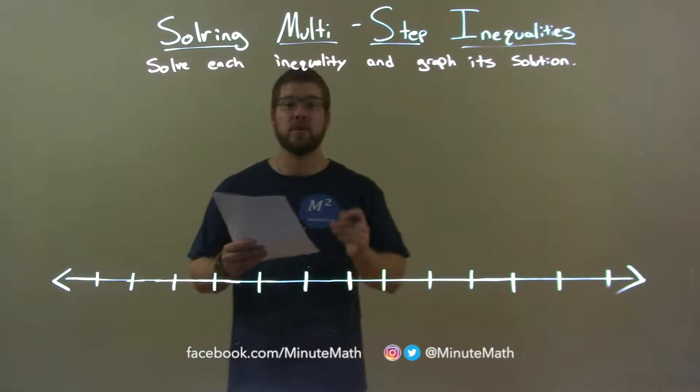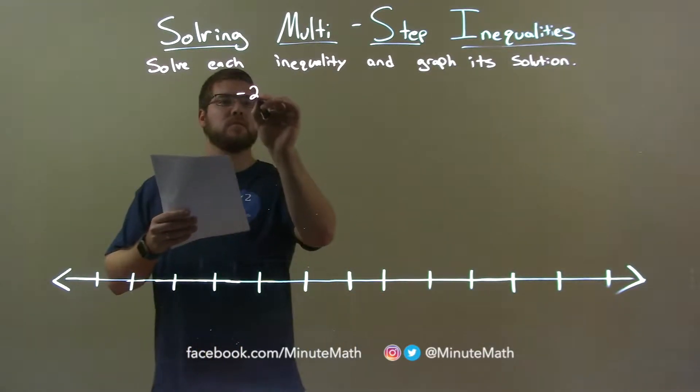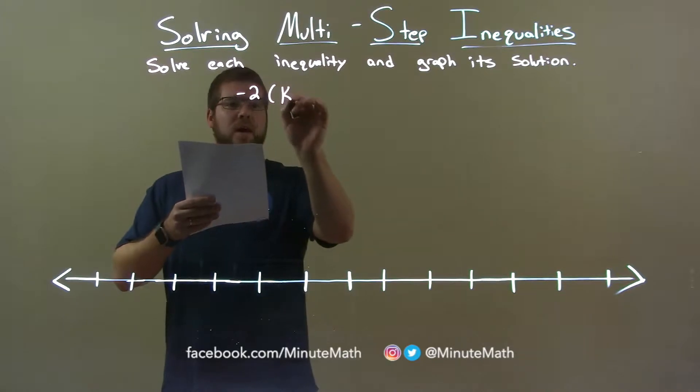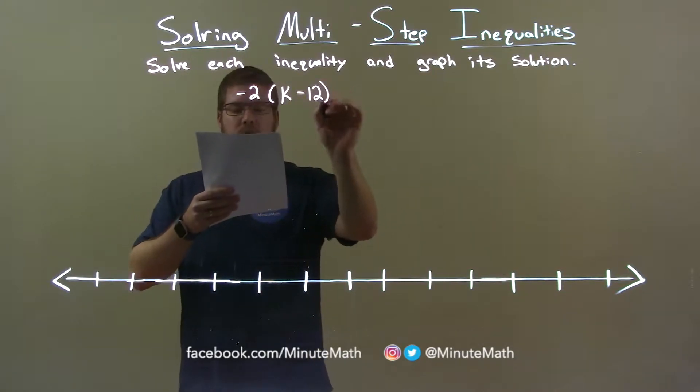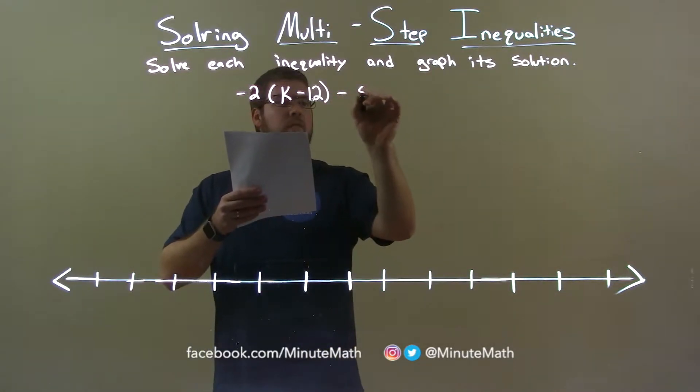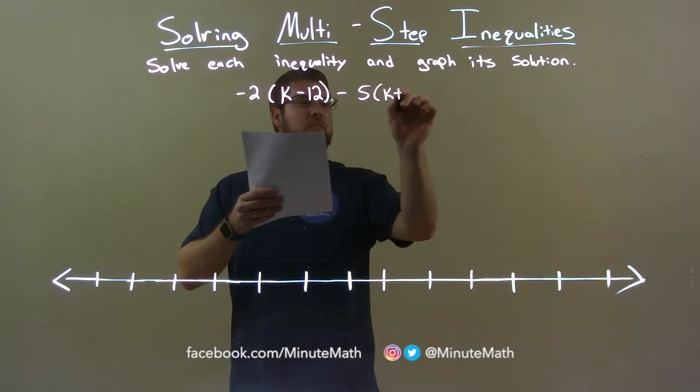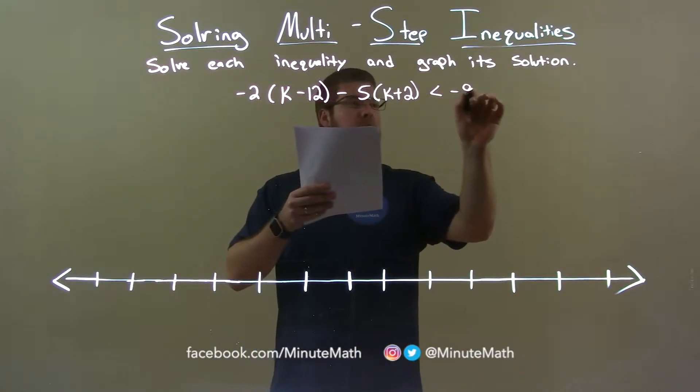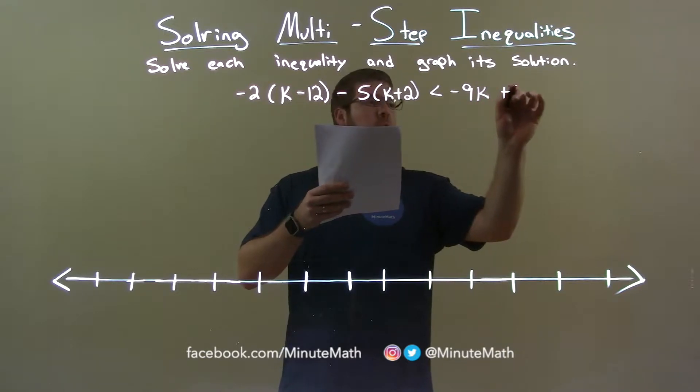So, if I was given this inequality, negative 2 times k minus 12 minus 5 times k plus 2 is less than negative 9k plus 4k.